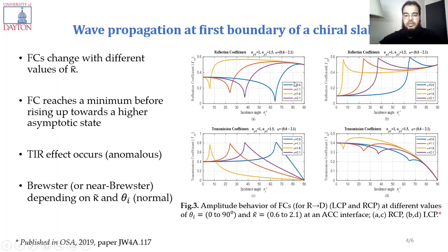We are showing some results for the coefficients — the top graphs for the reflection and the bottom graphs for the transmission coefficients. As we can see here, we have some phenomena like Brewster angles, total internal reflection, and so on, and these are calculated, shifted, or controlled by the Kaba factor.